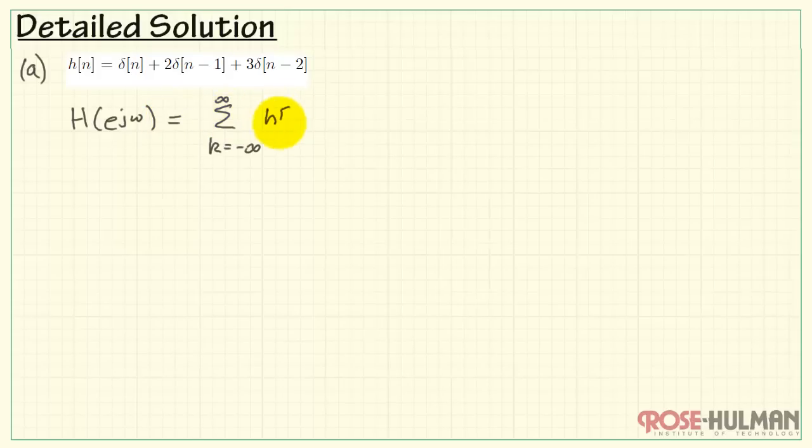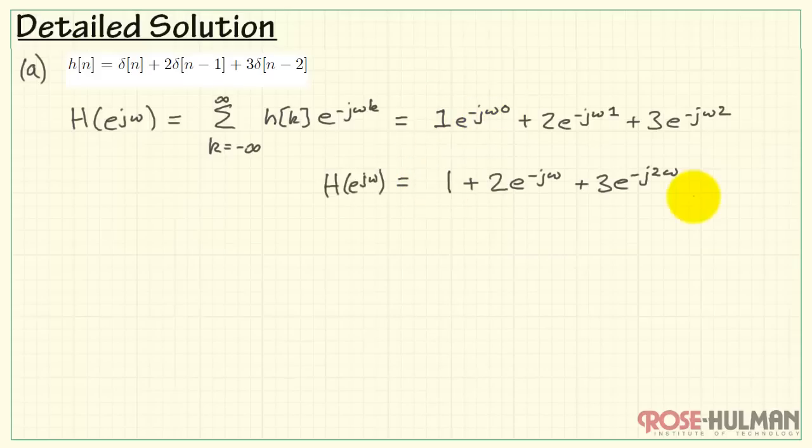Our frequency response from the impulse response is sum of k equals minus infinity to positive infinity, h of k times e to the minus j omega k. Now, we recognize that the coefficient of 1 occurs at N equals 0. So that would be at the k equals 0 index. Our coefficient of 2 takes place at k equals 1. And our last coefficient of 3, which is located at N equals 2, means that we are looking at k equals 2 in the summation. Now, let me write this in a bit of a simplified form. And that gives us our results for part A.